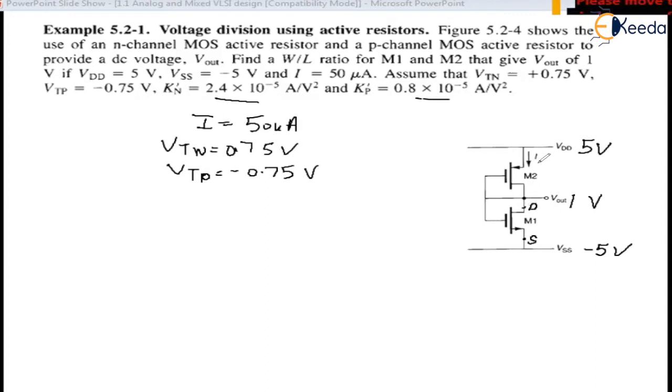Similarly for M2, drain must be at lower potential. So this should be drain and this should be source.